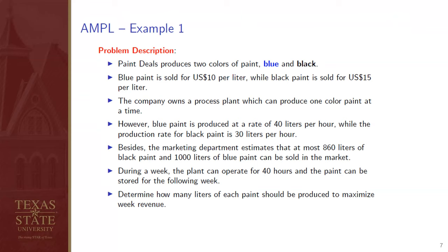Let's try an example. Paint Deals produces two colors of paint: blue and black. Blue paint sells for $10 per liter and black paint for $15 per liter. The company owns a process plant that produces one color at a time: blue at 40 liters per hour, black at 30 liters per hour. The marketing department estimates at most 860 liters of black paint and 1,000 liters of blue paint can be sold weekly. The plant can operate 40 hours per week, and paint can be stored for the following week.